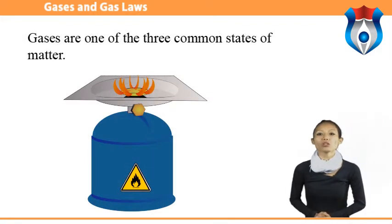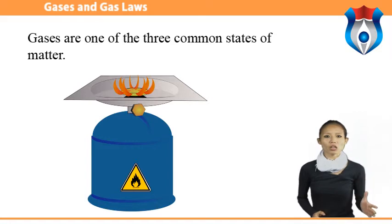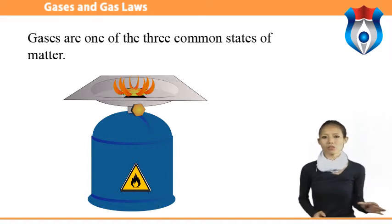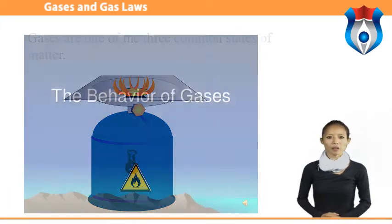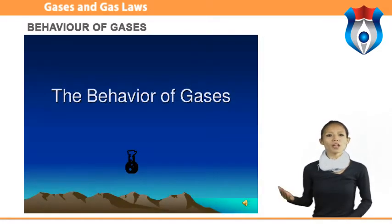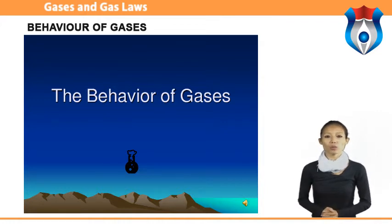A gas will take the shape of a container that holds it, and gases are easily compressible. Gases are one of the three common states of matter. A gas is a state of matter in which a substance does not have a specific shape or volume of its own, but adopts the form and size of its container. The atmosphere is too vast for us to have any control over atmospheric pressure.